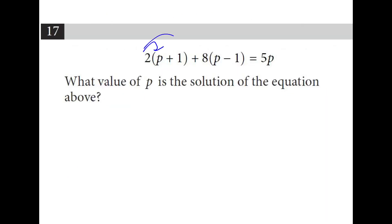First I will distribute the two and the eight. Then we combine like terms. I'll move all the numbers to the right and all the p's to the left. So I have five p's equal to six. If I divide both sides by five, I have six fifths or 1.2 as my final answer.